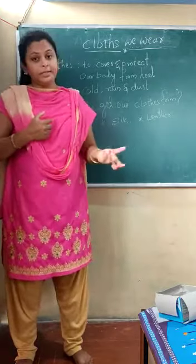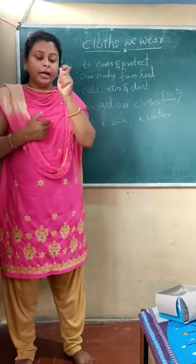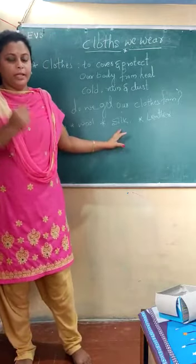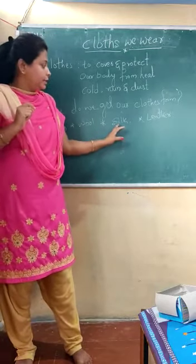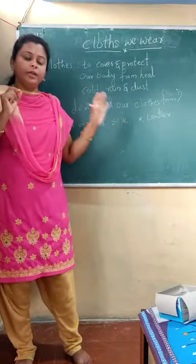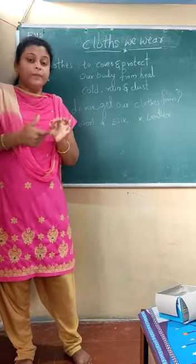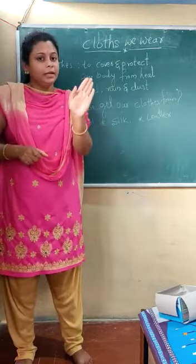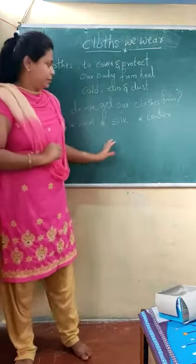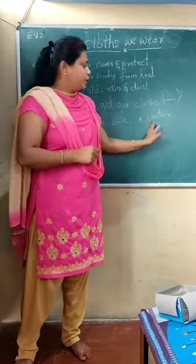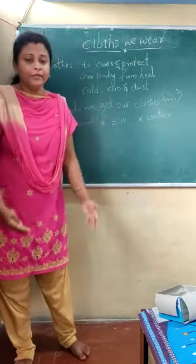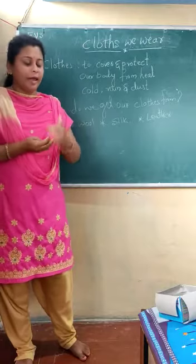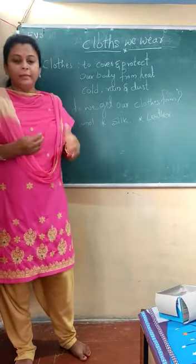Silk — we have silk sarees and silk dresses. Silk comes from the silkworm, which is one type of worm. The silkworm gives us silk wire, and using those threads the silk fabric is manufactured in factories.